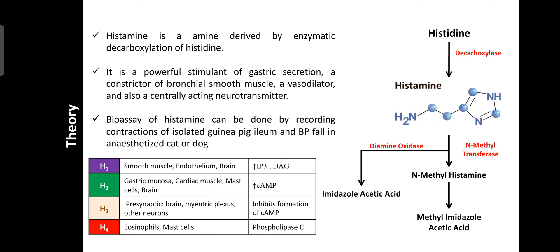Histamine also acts as a centrally acting neurotransmitter. The bioassay of histamine can be done by recording the contractions of isolated guinea pig ileum and blood pressure fall in anesthetized cat or dog. Histamine is formed from histidine in the presence of decarboxylase and is metabolized in the presence of two enzymes: diamine oxidase and N-methyl transferase.